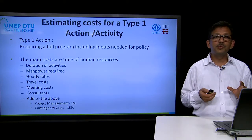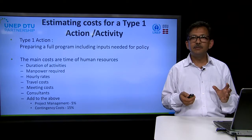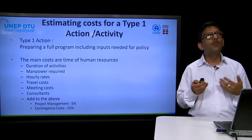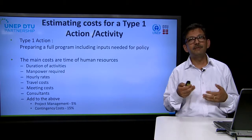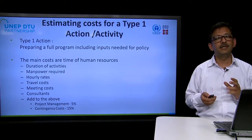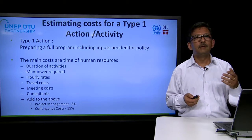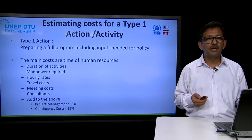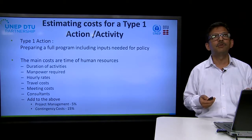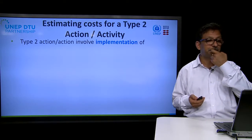We should also be aware that many times projects will run into certain delays or the scope of certain activities might change. As a result, we should also plan for contingency. As a thumb rule, you could put 15 percent of the budget towards contingency to take care of these unforeseen circumstances.